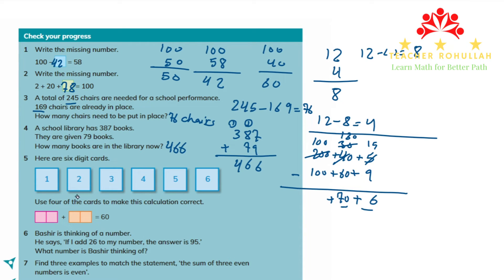In question 5, here are 6 digit cards. We have 1, 2, 3, 4, 5, and 6. Use 4 of the digit cards to make this calculation correct. A 2-digit number plus another 2-digit number will be equal to 60. In the ones place we have 0, so we have to put in the ones place some numbers that can give us 0 and 60 here. We can put 6 here and 4 here. 6 plus 4 is 10, and we have another 1 here. If we put 2 here, 3 here, we will get 60 right here.